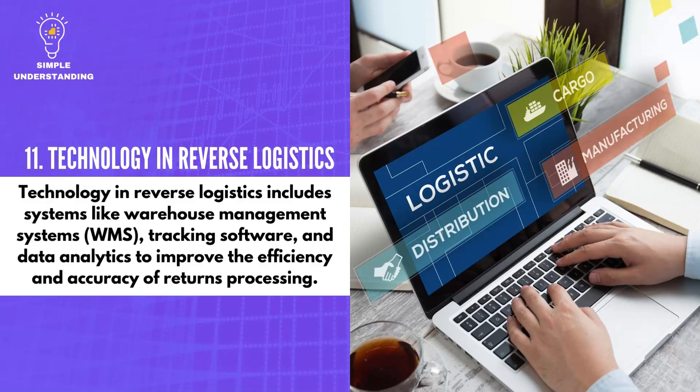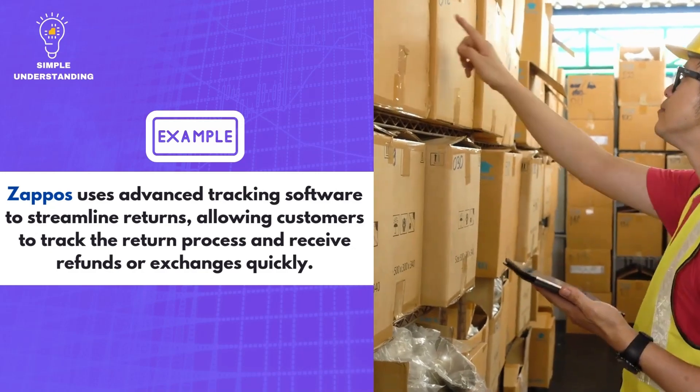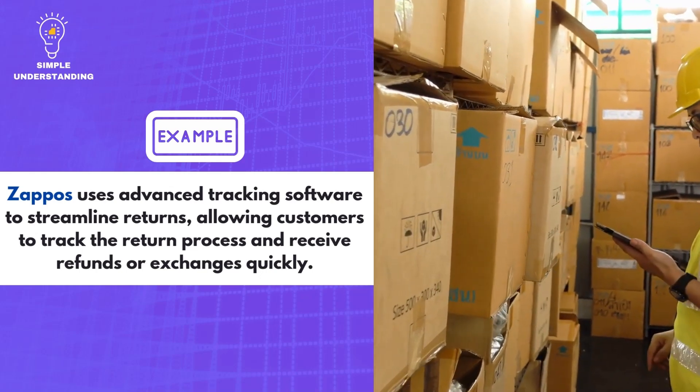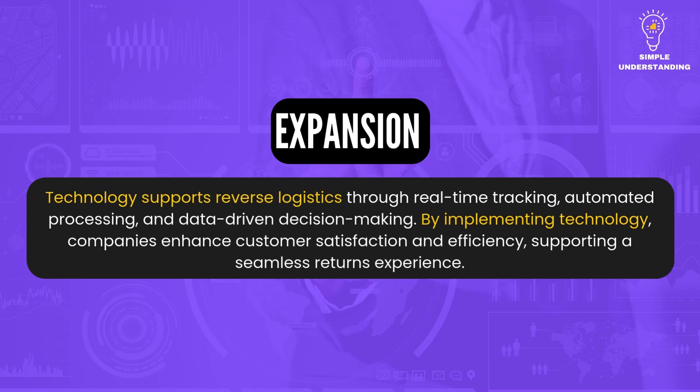11. Technology in Reverse Logistics. Technology in reverse logistics includes systems like Warehouse Management Systems (WMS), tracking software, and data analytics to improve the efficiency and accuracy of returns processing. Zappos uses advanced tracking software to streamline returns, allowing customers to track the return process and receive refunds or exchanges quickly. Technology supports reverse logistics through real-time tracking, automated processing, and data-driven decision-making, enhancing customer satisfaction and efficiency for a seamless returns experience.